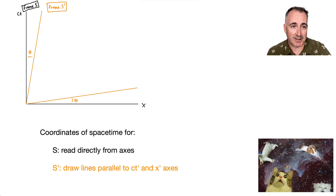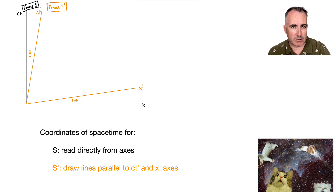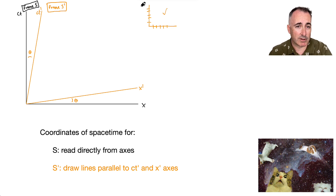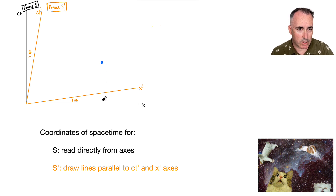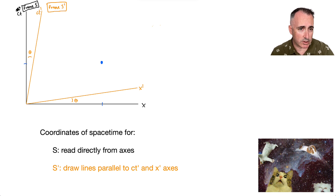Just to remind you — we have this angle, X primed here and CT primed, but we need to draw a grid as well. Just like you're used to reading values from graph axes, here we want to do a grid that's at an angle. The coordinates of space-time for S: if you have some object, you would read its position and time directly from the axes — its position in light years or meters, and the time from CT.